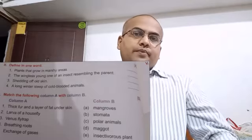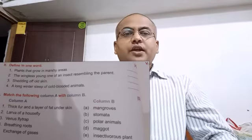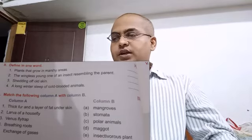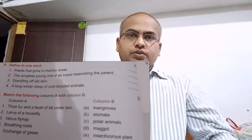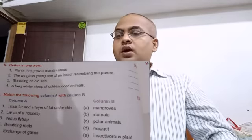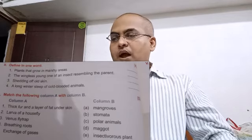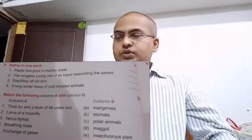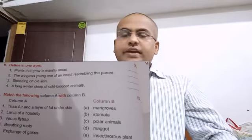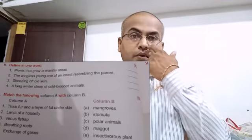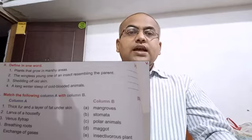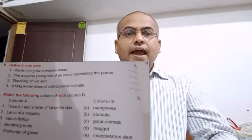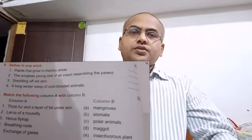Next question: Venus flytrap. We know that Venus flytrap is an insectivorous plant. Next question: Breathing roots. Mangrove plants have breathing roots. Next question: Exchange of gases. In the process of photosynthesis, stomata function to help in the exchange of gases from the atmosphere.